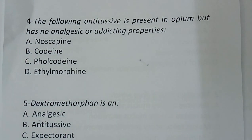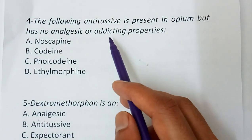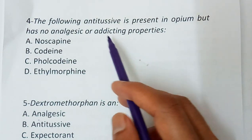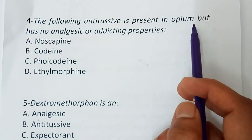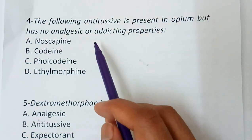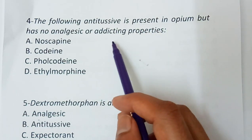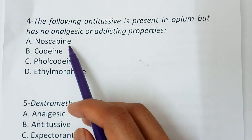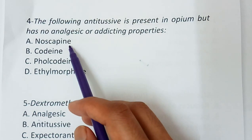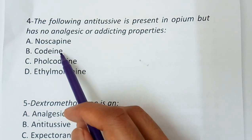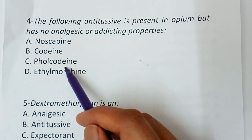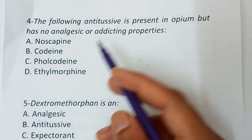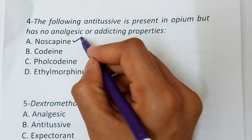Question number four: The following antitussive is present in opium but has no analgesic or addicting properties. Options are noscapine, codeine, pholcodine, or morphine. The correct answer is noscapine.